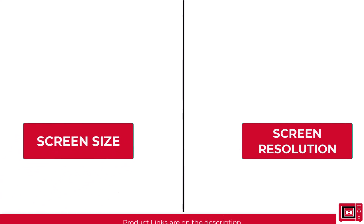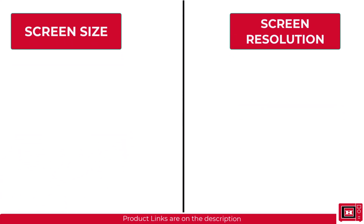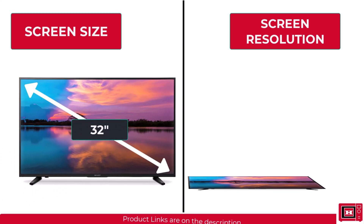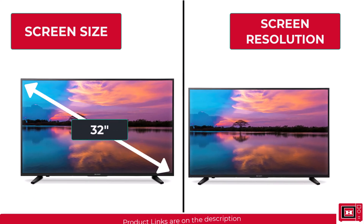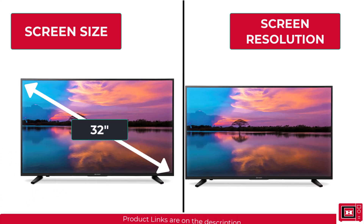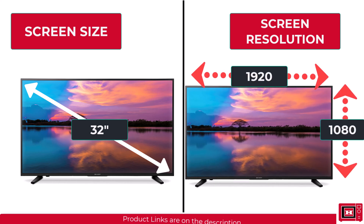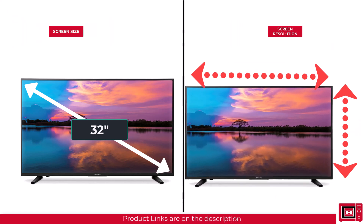Screen size measures the overall size of the TV from one edge to the other, while screen resolution tells you the number of pixels by stating the number of pixels on the horizontal side and the number of pixels on the vertical side, which when multiplied would give you the total number of pixels.